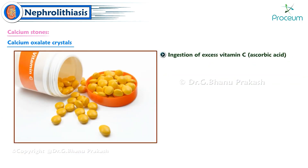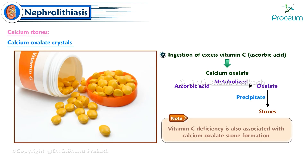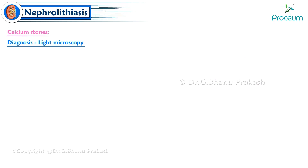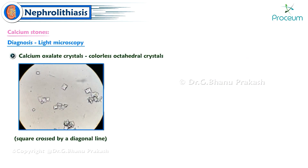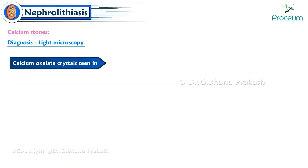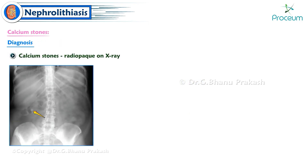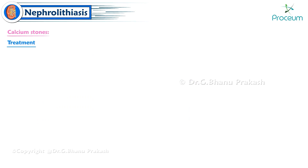Ingestion of excess vitamin C (ascorbic acid) can cause calcium oxalate stone formation because ascorbic acid is metabolized to oxalate. Note: vitamin C deficiency is also associated with calcium oxalate stone formation. On light microscopy, calcium oxalate crystals appear as colorless octahedral crystals — square crossed by a diagonal line in 2D — classically described as envelope-shaped (calcium dihydrate) or dumbbell-shaped (calcium monohydrate).